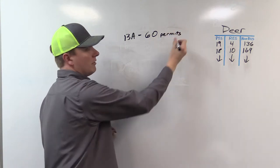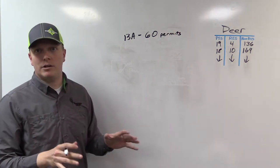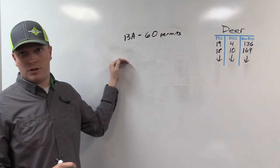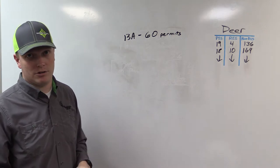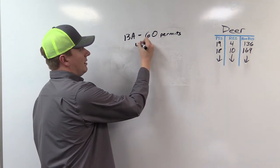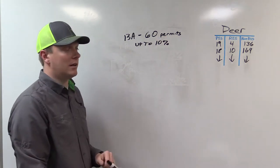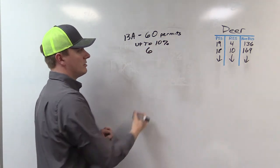Now this trial, they don't do it at the species level, they do it at the hunt level. So they get down to everybody who's put 13A on their application, now they're going to do the draw. So now our 10% applies for non-residents. We can have up to 10% of the tags, so we can have 6 tags total.